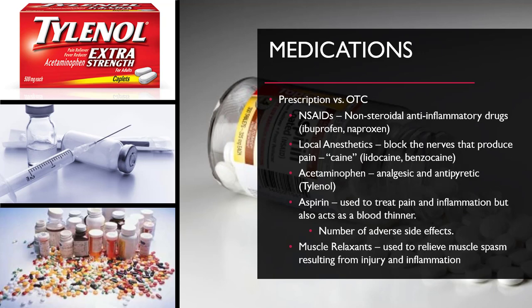Medications can be prescribed by a physician or purchased over the counter. NSAIDs, or non-steroidal anti-inflammatory drugs, are common OTC medications; examples include ibuprofen and naproxen. Local anesthetics block the nerves that produce pain — the names of these medications typically end in '-caine.' Examples include lidocaine and benzocaine. Local anesthetics can either be injected or taken orally.